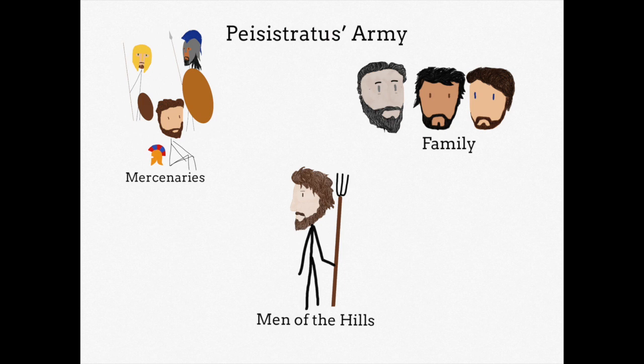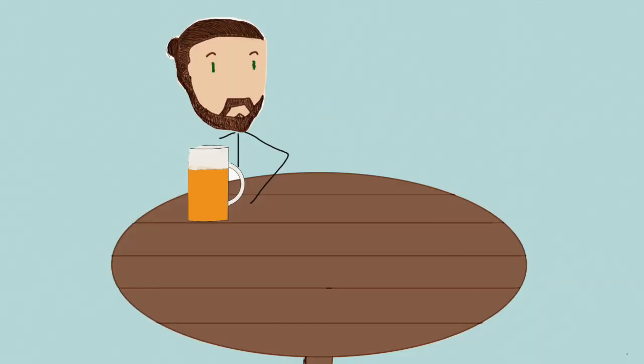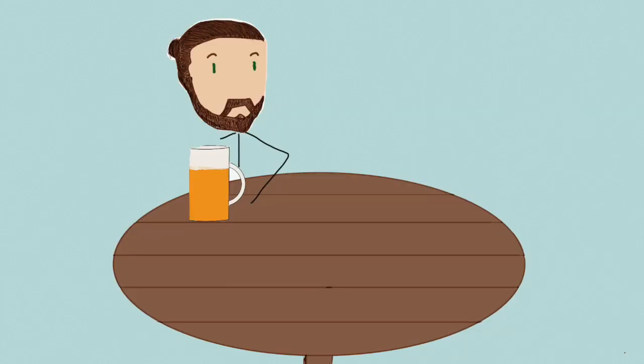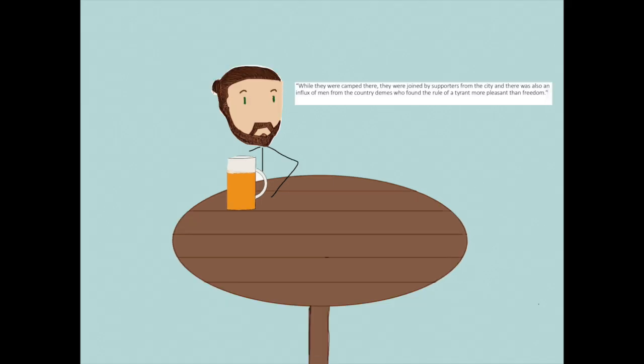Remember that prior to his exile, Pisistratus had represented the poorest farmers who inhabited the rocky hills of the region. Pisistratus had not landed in Athens, but 26.2 miles away at the beach of Marathon. The name's not a coincidence.